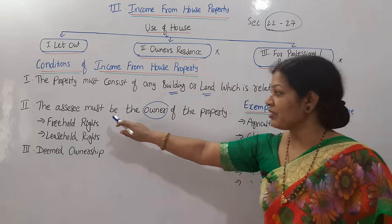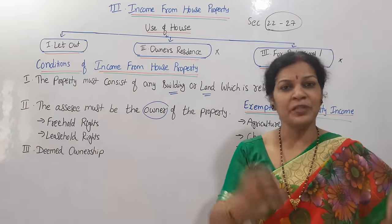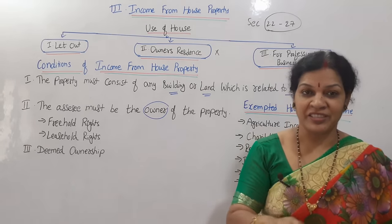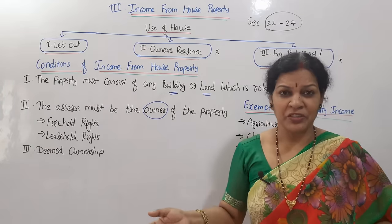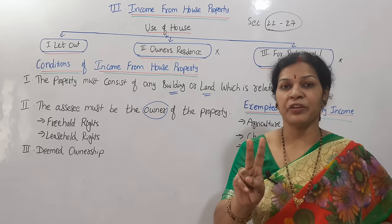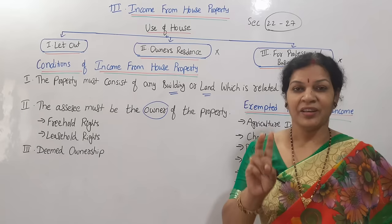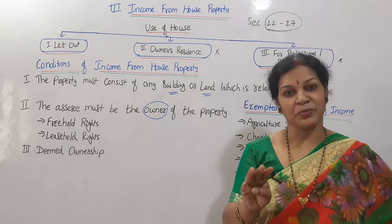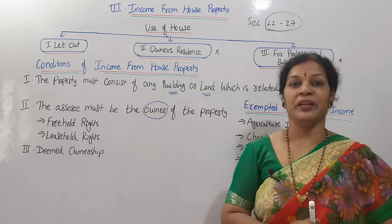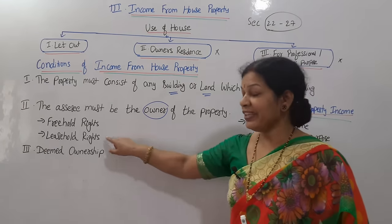Regarding the assessee being the owner, there are a few points. First is freehold rights — the person has absolute rights as owner. Whatever income he earns in the form of rent is taxable. Freehold rights may arise because he purchased the house or land, received it as a gift from someone, or inherited it as ancestral property. In any of these three cases, he has full rights on the building, and rent income is considered income from house property.